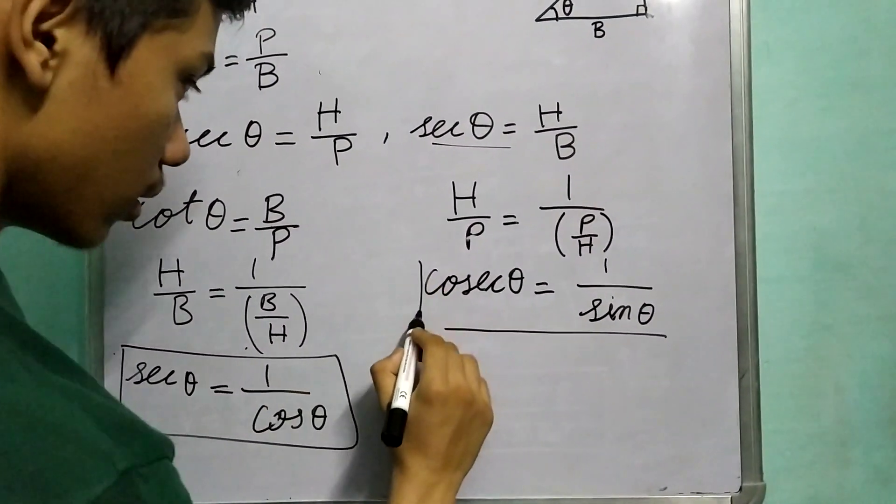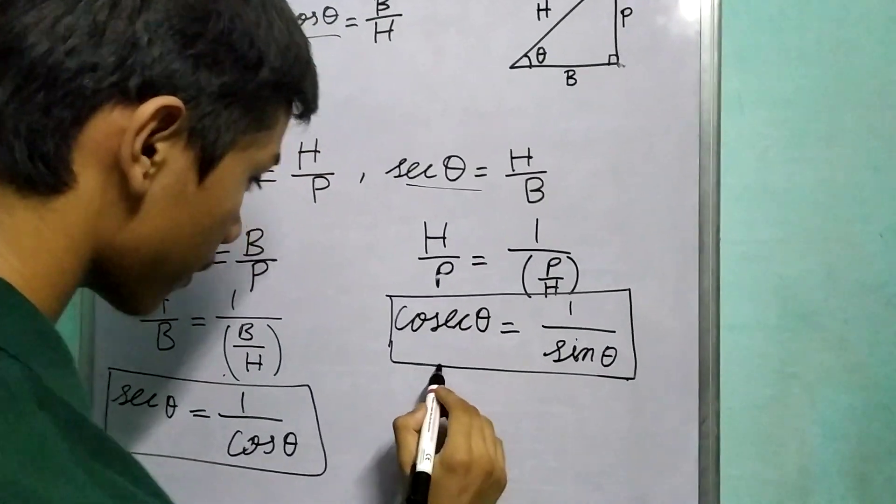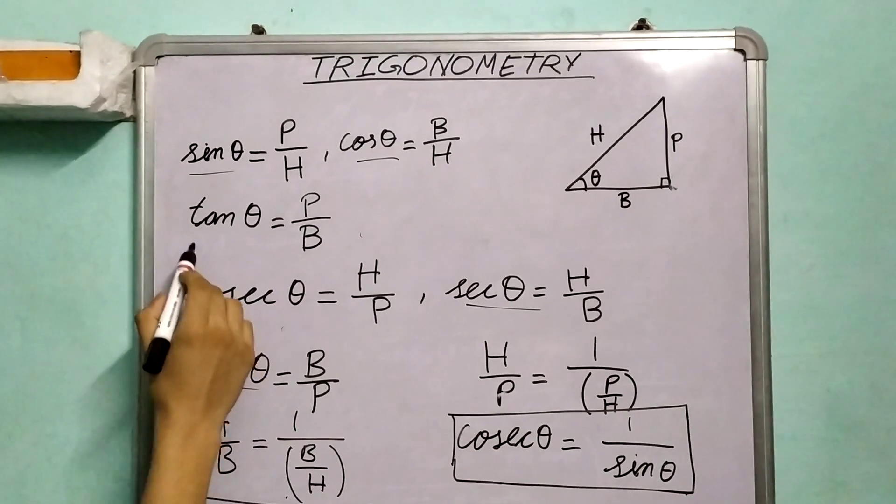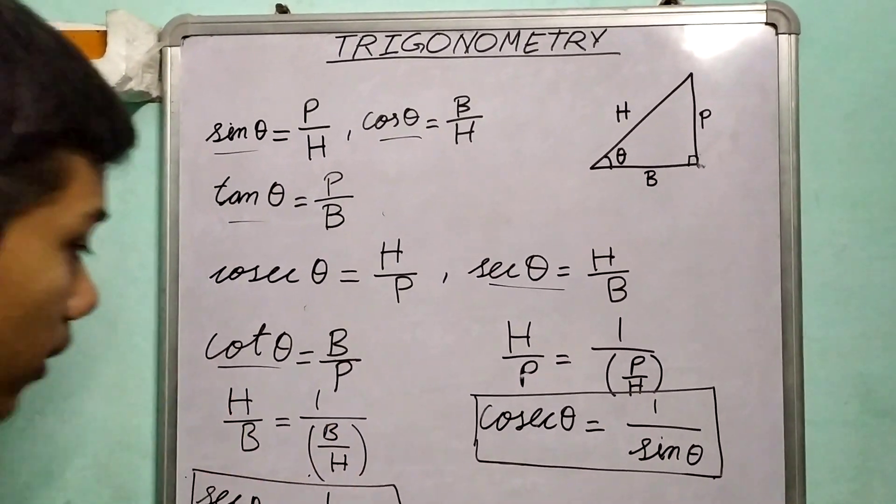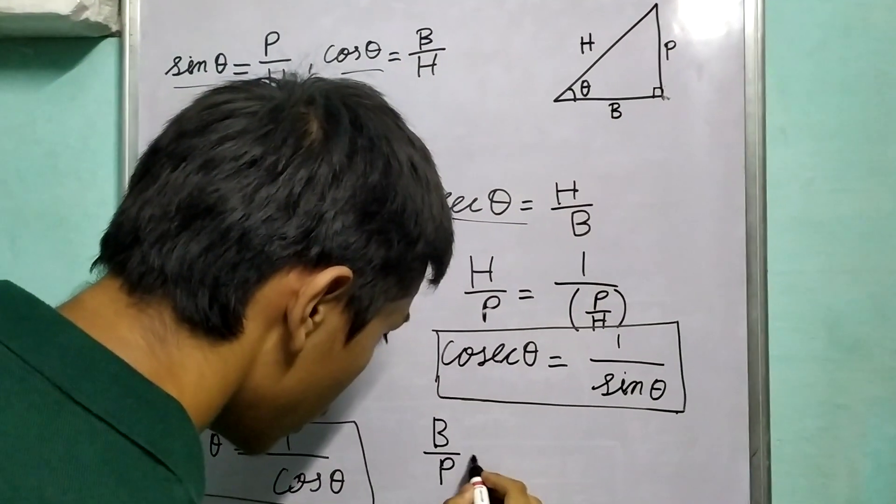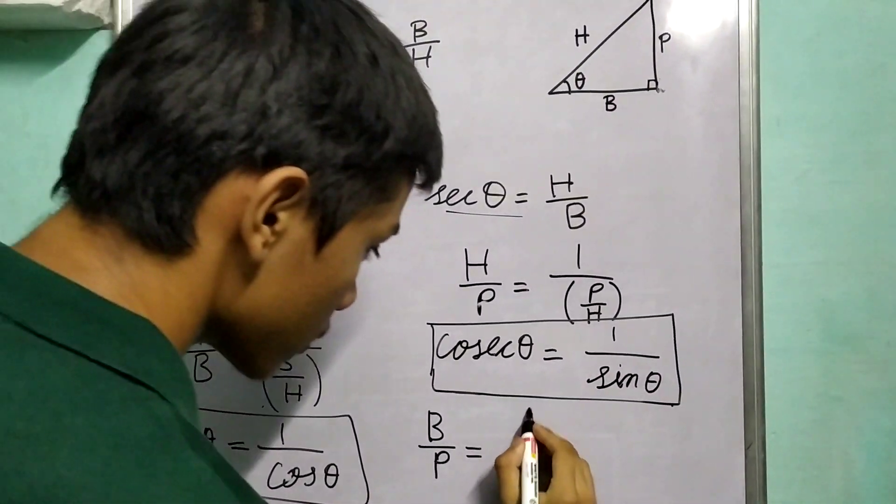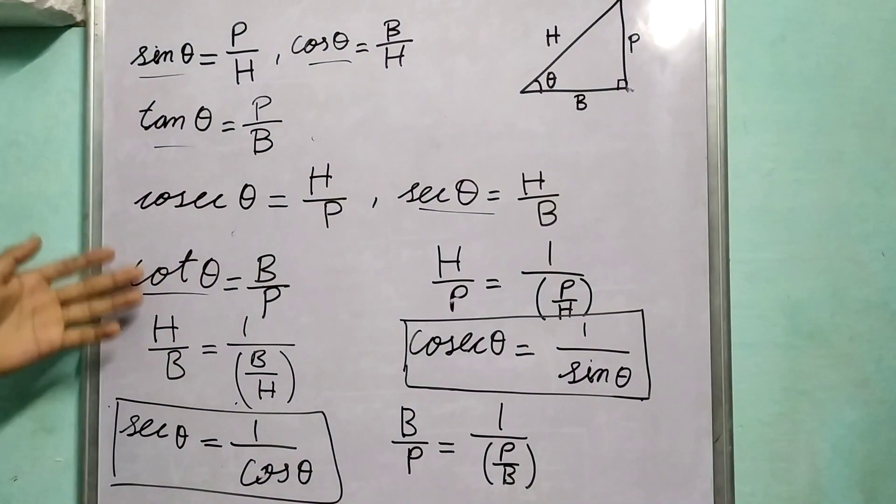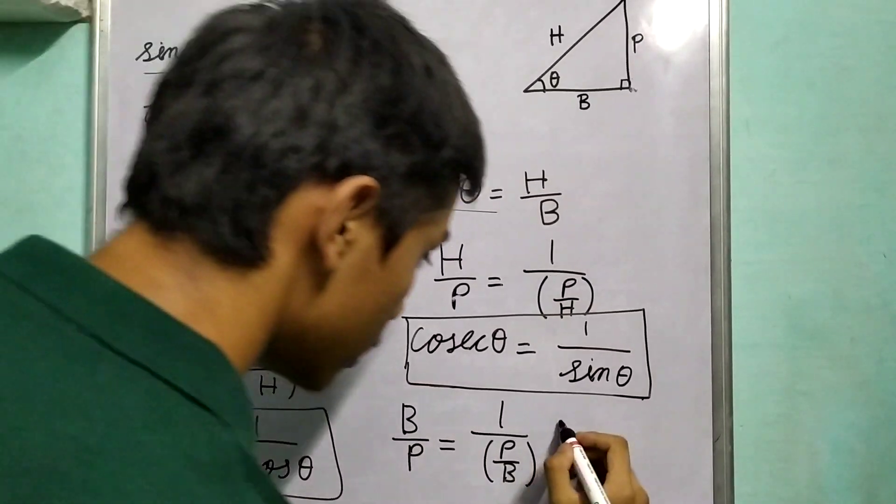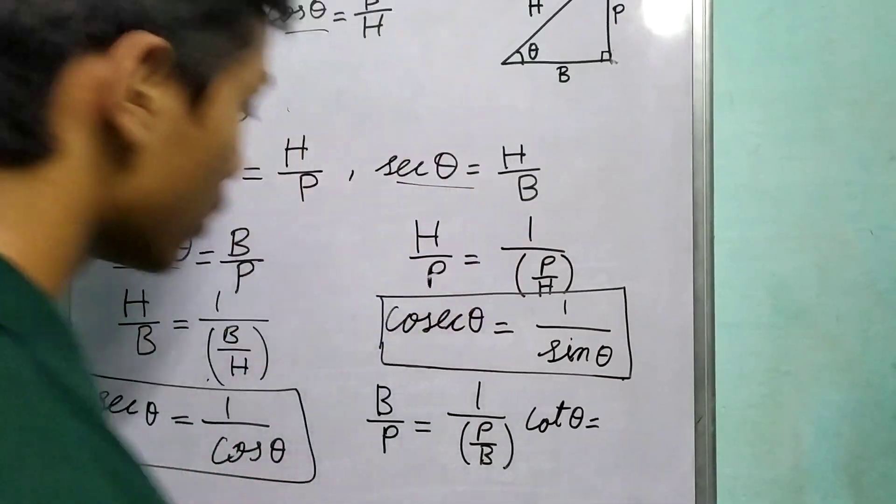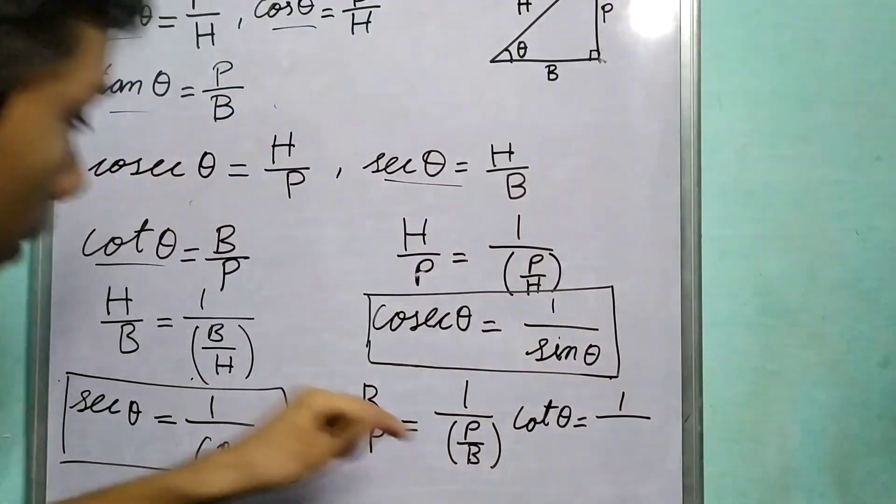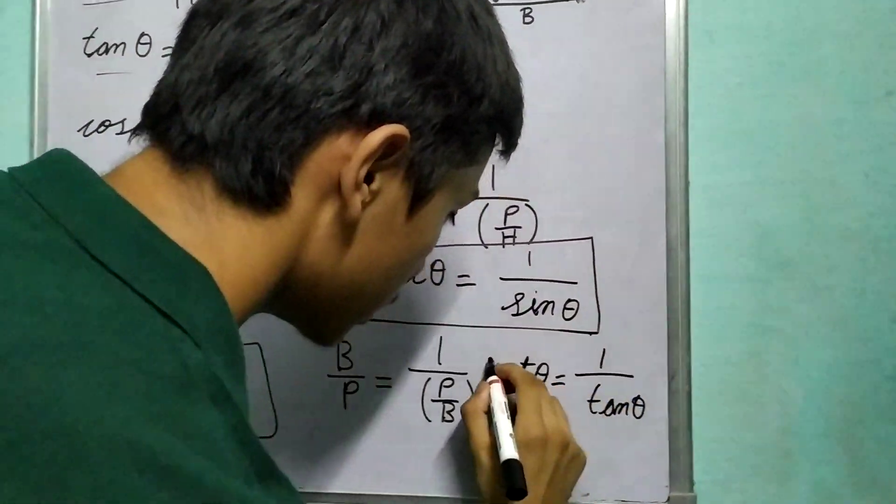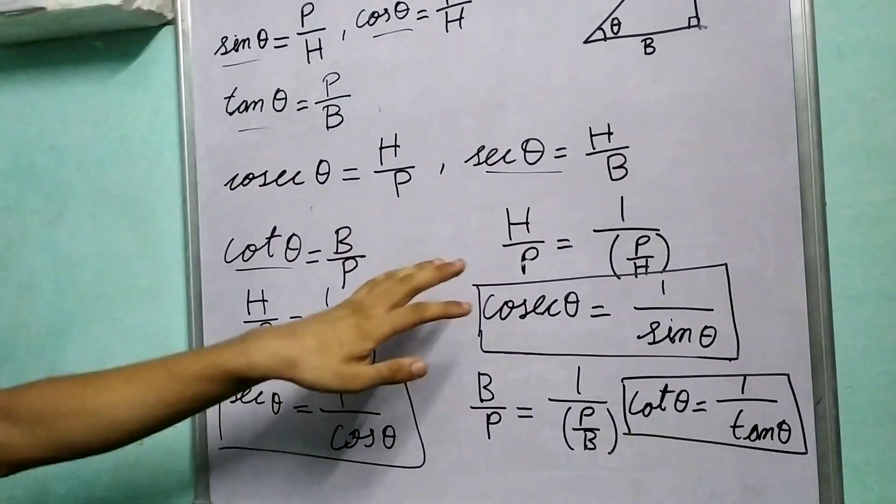Let me box these equations. Now we are left with tan theta and cot theta. Again, B by P is the reciprocal of P by B, so we can write it as 1 upon P by B. And what is B by P? B by P is cot theta, so cot theta equals 1 upon tan theta. So these are the three relationships.